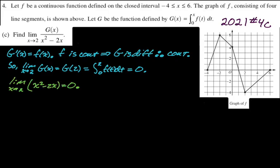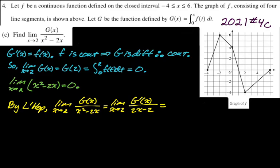For the denominator: the limit as x approaches 2 of x² − 2x equals 0. So far in both examples, one function is given explicitly and the other you know about — you get used to that pattern. Now we can apply L'Hopital's rule. By L'Hopital's, the limit as x approaches 2 of G(x)/(x² − 2x) equals the limit as x approaches 2 of G'(x)/(2x − 2). Since G'(x) = F(x), we need F(2) from the graph, which gives −4, and plugging in 2 in the denominator gives 2. So this limit equals −2.